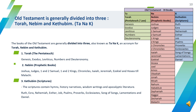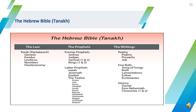The books under the Kethubim category are Ruth, Ezra, Nehemiah, Esther, Job, Psalms, Proverbs, Ecclesiastes, Song of Songs, Lamentations, and Daniel. The Hebrew Bible used by the Jews is classified on the basis of Tanakh — the Torah, Nabi'm, and Kethubim.